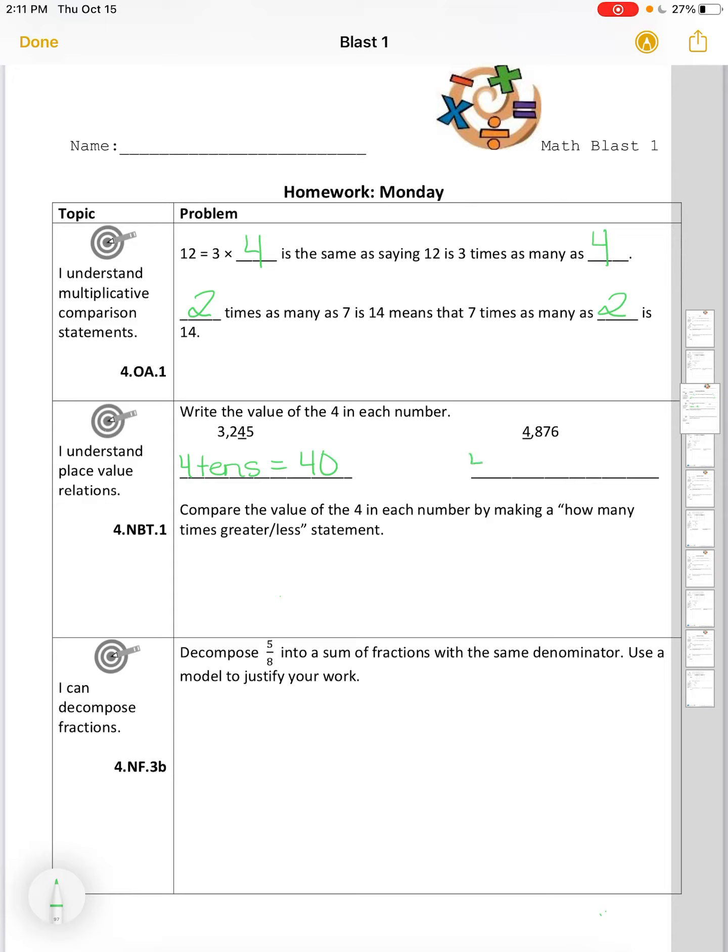4,876 has a 4 in the thousands place. And a 4 in the thousands place has a value that's equal to 4,000.